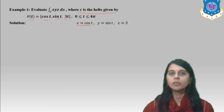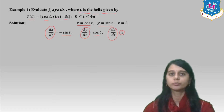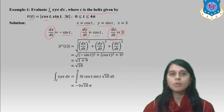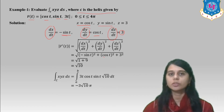We set x = cos t, y = sin t, and z = 3t. Computing the derivatives: dx/dt = −sin t, dy/dt = cos t, dz/dt = 3. Then |R-bar prime(t)| equals the square root of (−sin t)² + (cos t)² + 3², which gives the square root of 1 + 9 = √10.